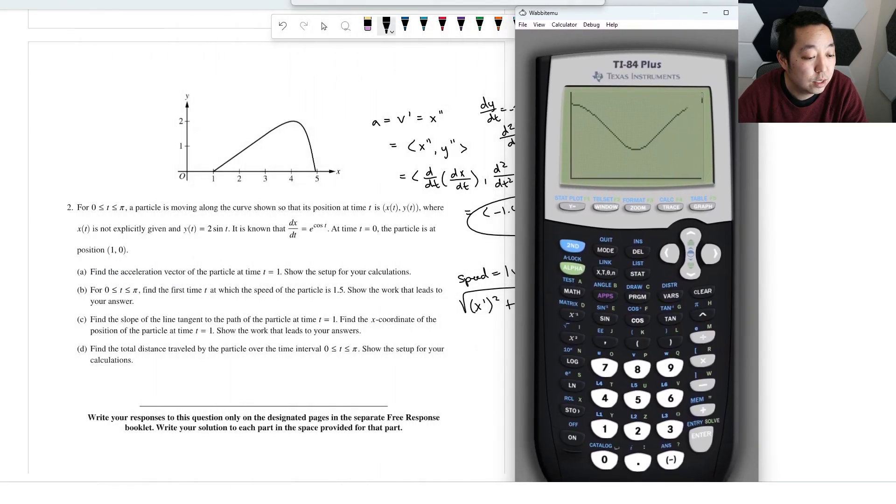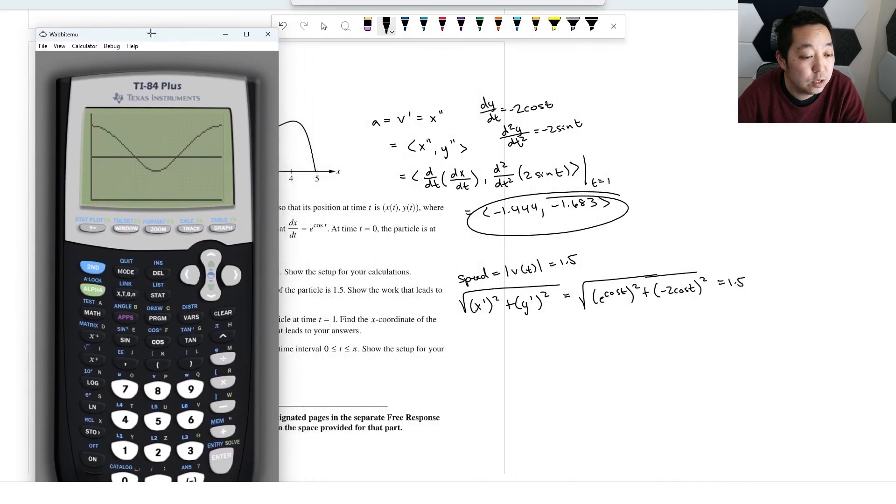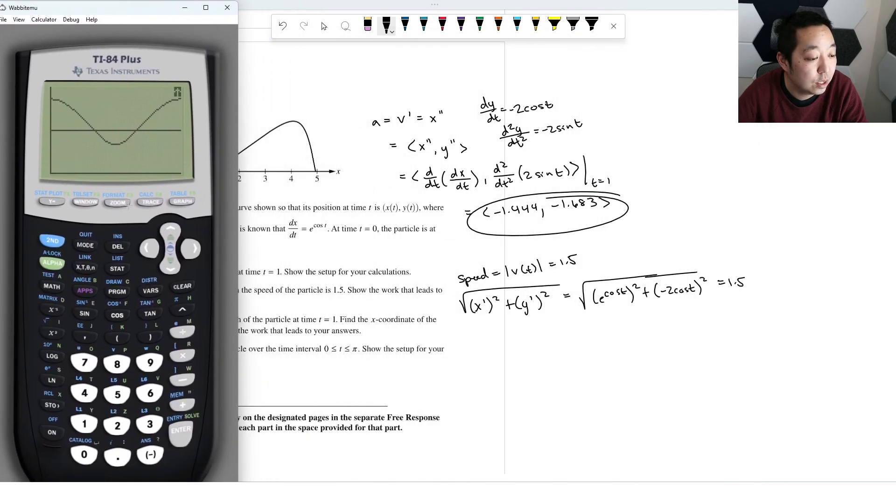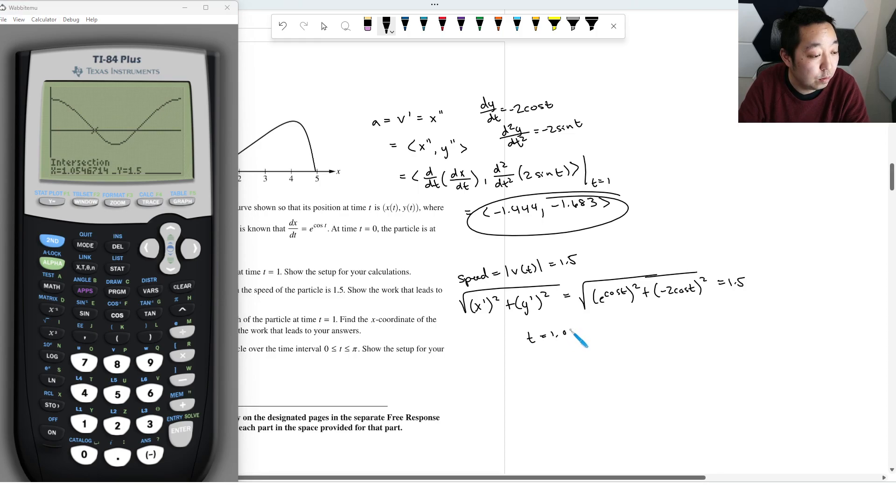Okay, and while it's thinking, let's read the question: when does speed equal 1.5, show your answer. And then we're just going to find those intersection points. Calculate intersect, first curve, second curve, and then your guess is just somewhere close by. Let the calculator work it out. And so that occurs at t equals 1.0547.